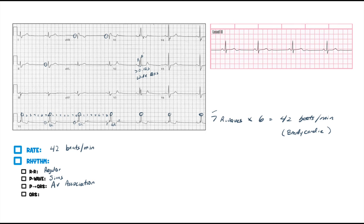This RSR configuration is particularly confined to V1 to V3. You get a little bit of it here in V1, definitely got another one in V2, and another one in V3. We call these bunny ears — they're an RSR configuration. This is indicative of a right bundle branch block.